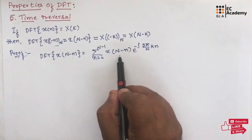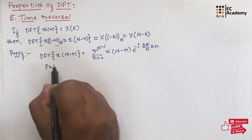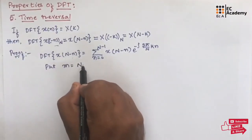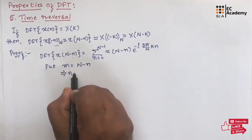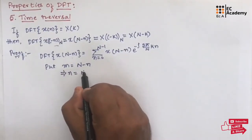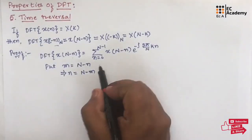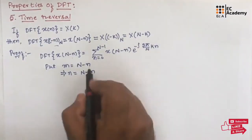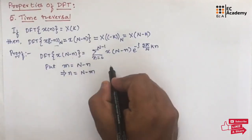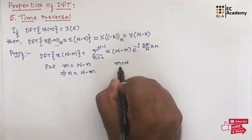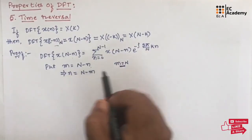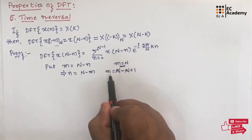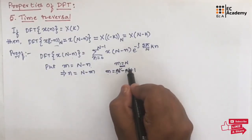Now let us put m = N - n. From this, we can write n = N - m. In the lower limit of the summation, if we put n=0, then m = N. In the upper limit, n = N-1, so m = N - (N-1) = 1. So the lower value of the summation becomes N and the upper value becomes 1.